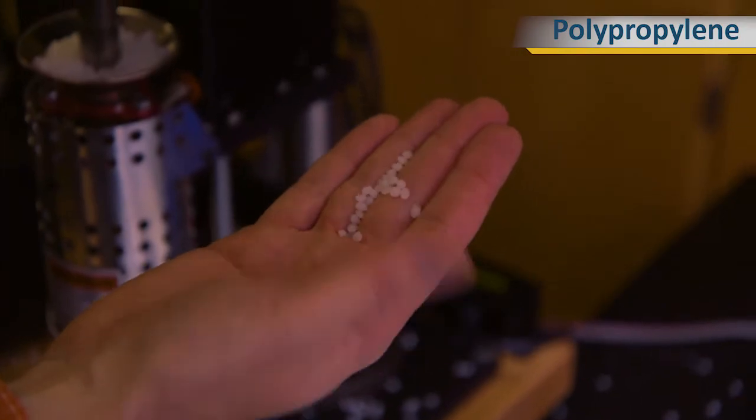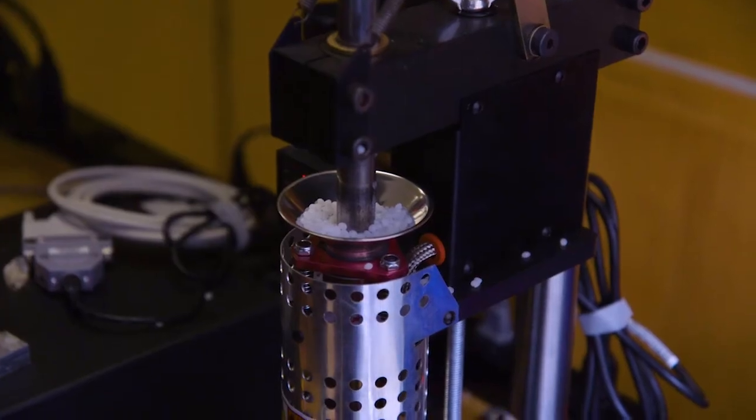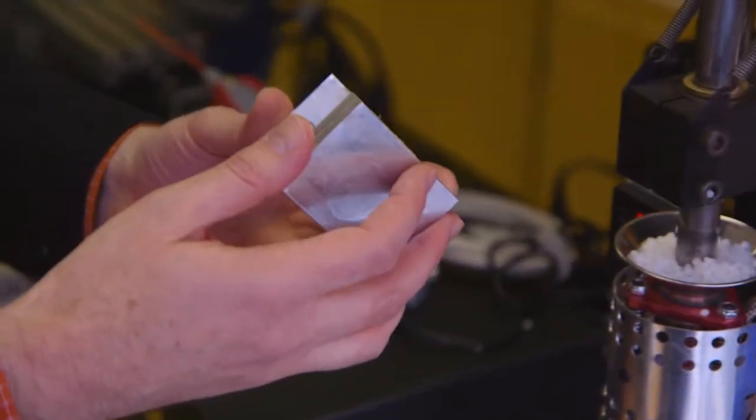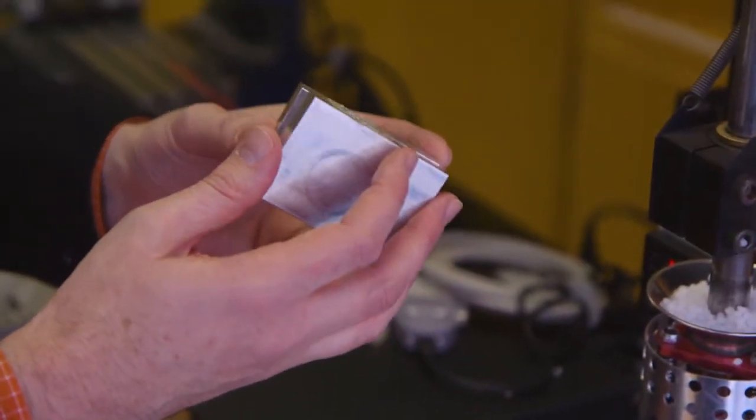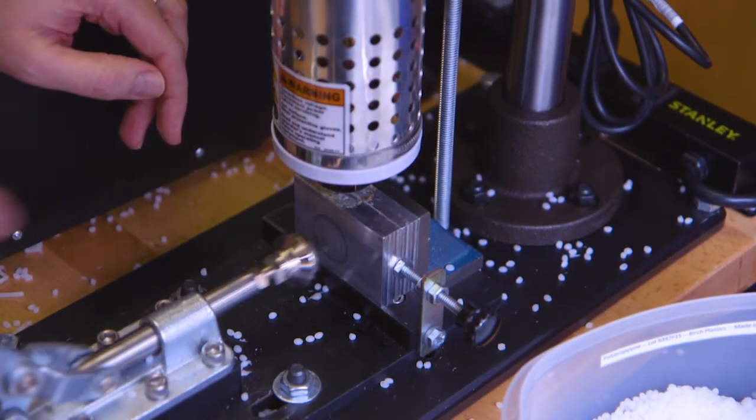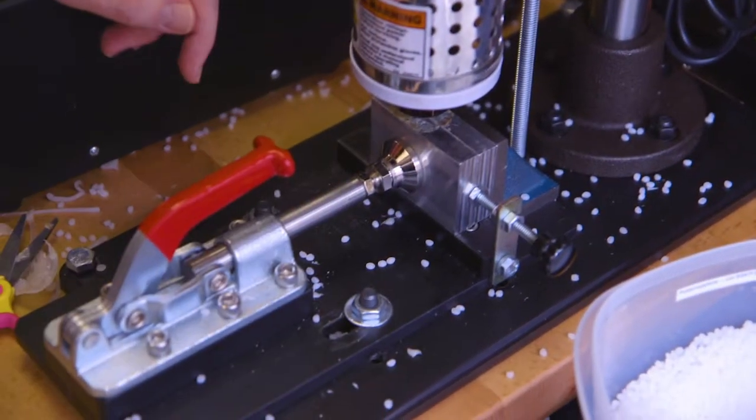These are polypropylene pellets. The students will add the plastic pellets to the hopper. The students then assemble the two-part mold together. We put the mold into its place and then engage the clamp to hold it shut.